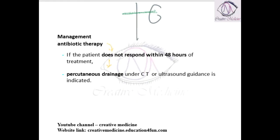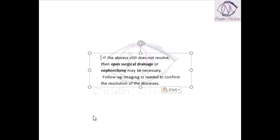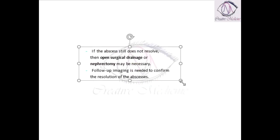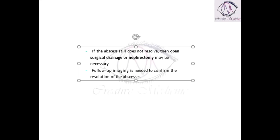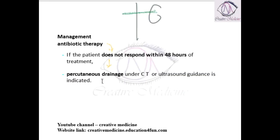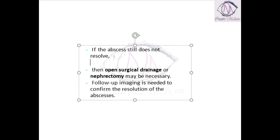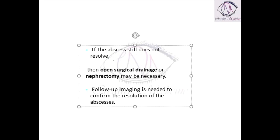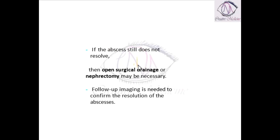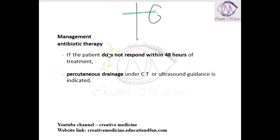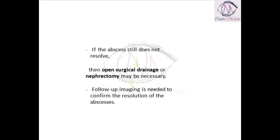If the abscess does not resolve even after percutaneous drainage, open surgical drainage is performed. Following open surgical drainage, a follow-up imaging is done to confirm resolution of the abscess. In summary: first give antibiotics; if no response, do percutaneous drainage; if still no response, perform open surgical drainage and nephrectomy, followed by confirmation of abscess resolution.